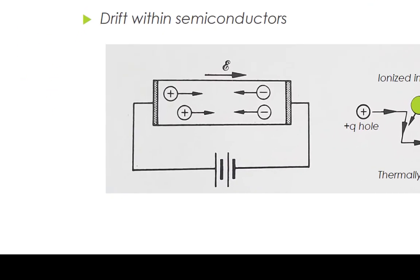Within semiconductors, the drifting motion of the carriers can be described as follows. First, when an electric field E is applied across a semiconductor, the electric force on the carriers will accelerate the positive Q-charged holes in the direction of the electric field and the negative Q-charged electrons in the direction opposite to the electric field.